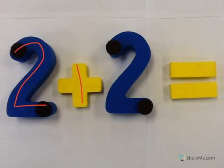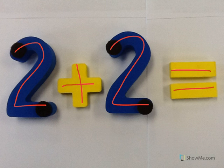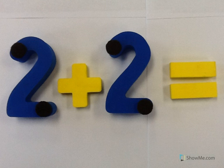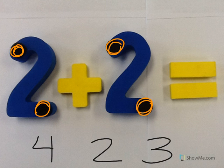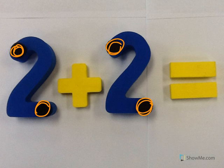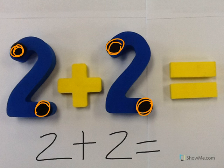Two plus two equals what? Let's add the touch points. Ready? One, two, three, four. Point to the number four. Good. Two plus two equals four. Nice job.